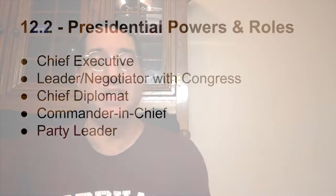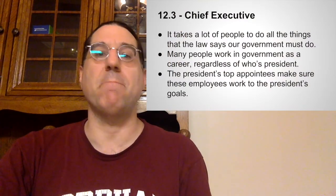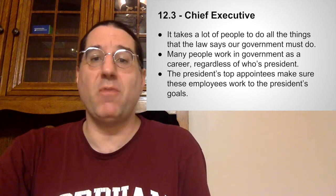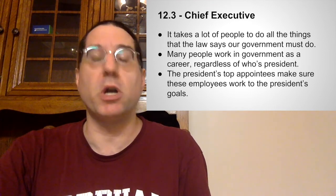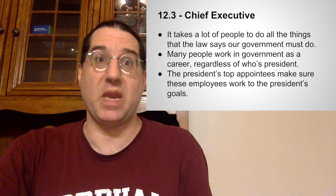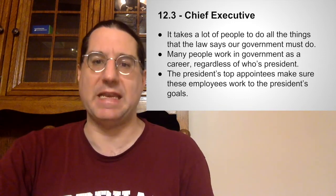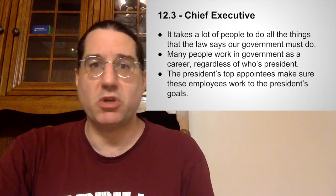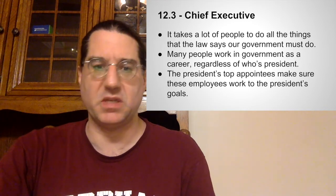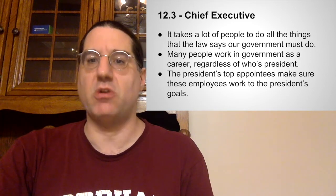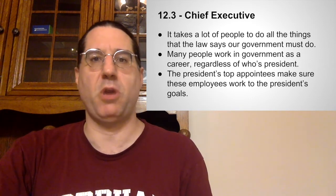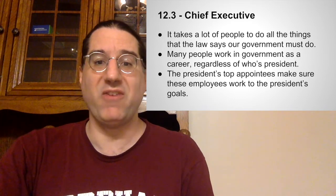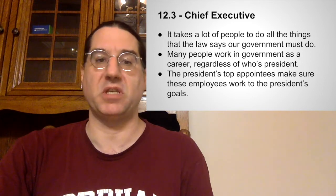When George Washington took office, the executive branch was very small. Today, it's a massive enterprise, not only as a result of the country's growth, but because the federal government has gotten involved in American society to a much larger extent over the last century, and so we need a bigger government to handle all of those added tasks. Most of the people who get the government's work done are permanent employees who might serve for decades under a number of different presidents — IRS agents, FBI investigators, federal food inspectors, civil rights attorneys at the Justice Department, economists at the Labor Department. These are just a few examples of people who work as part of the executive branch but aren't chosen by a particular president or his team.